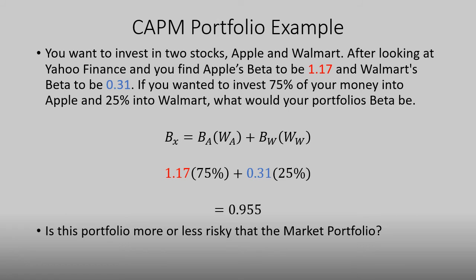Just by looking at the question, we can see that Apple's beta is higher than the market portfolio's beta, whereas Walmart's is significantly less. This plays a lot into how risky and how susceptible this portfolio is to market risk. I'll leave this question for you: is this portfolio more or less risky than the market portfolio?